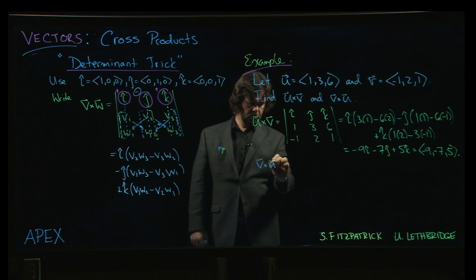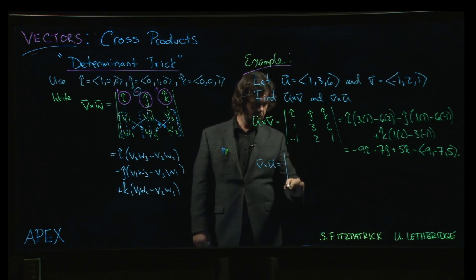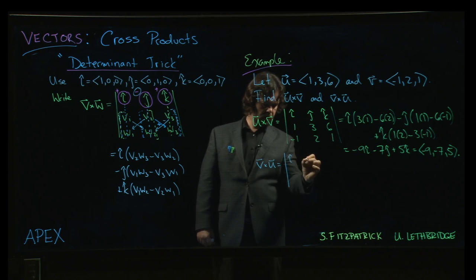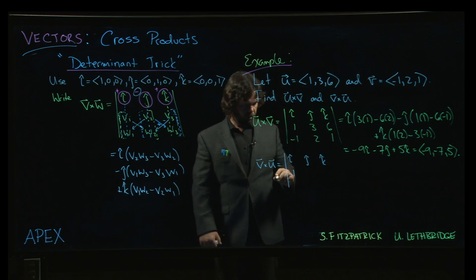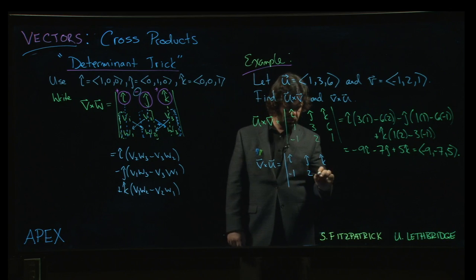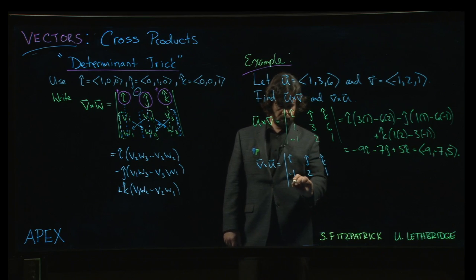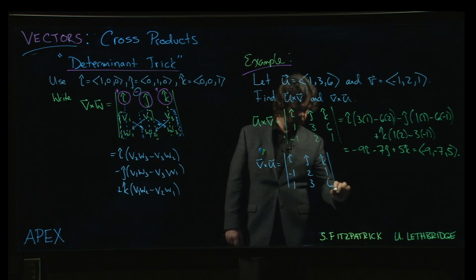v cross u. i, j, k. Minus 1, 2, 1, 1, 3, 6. Okay.